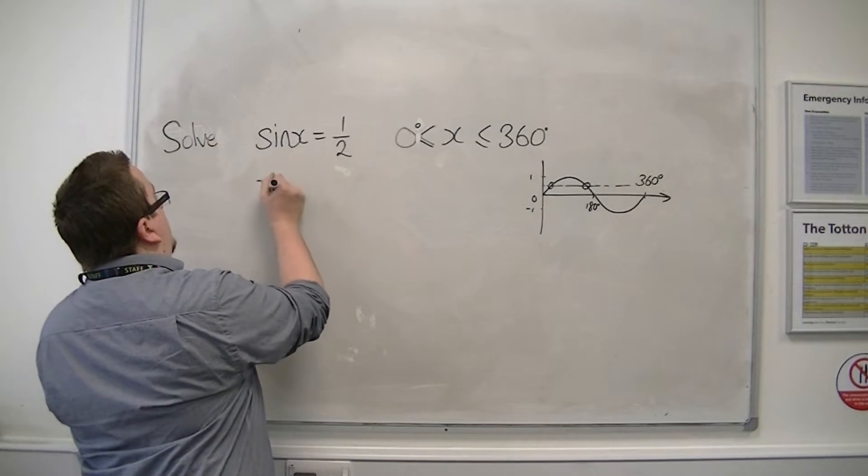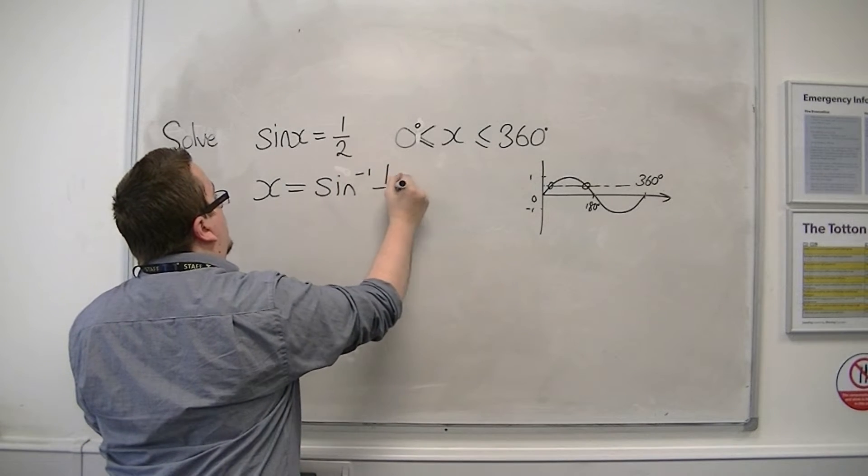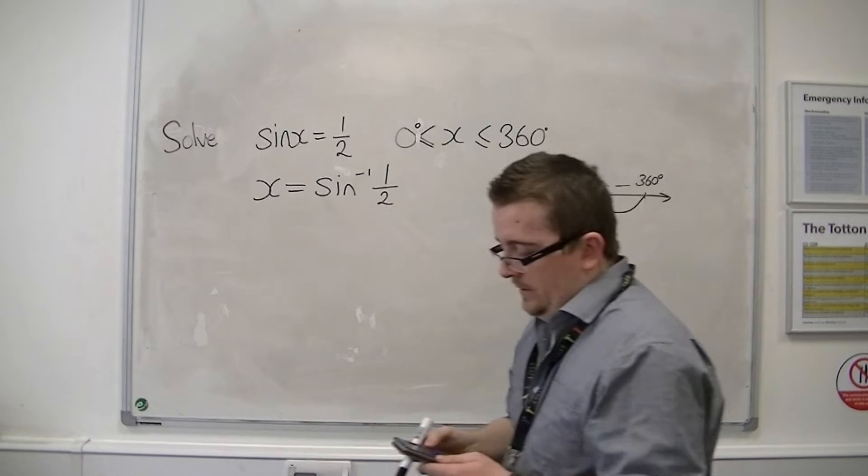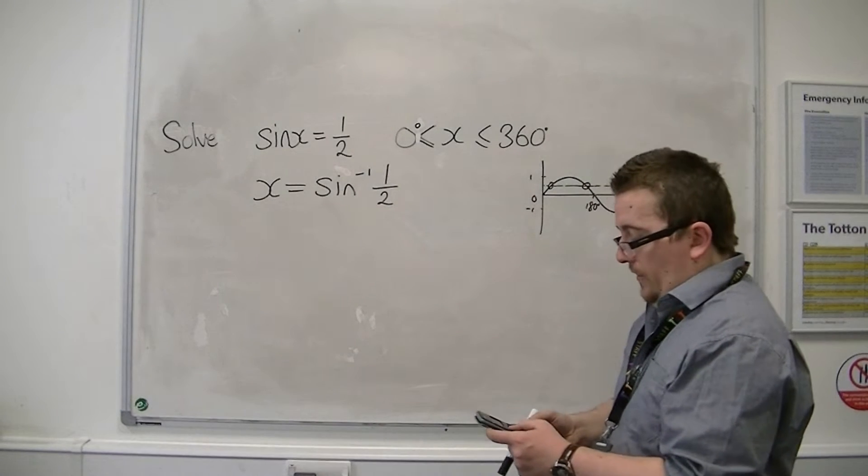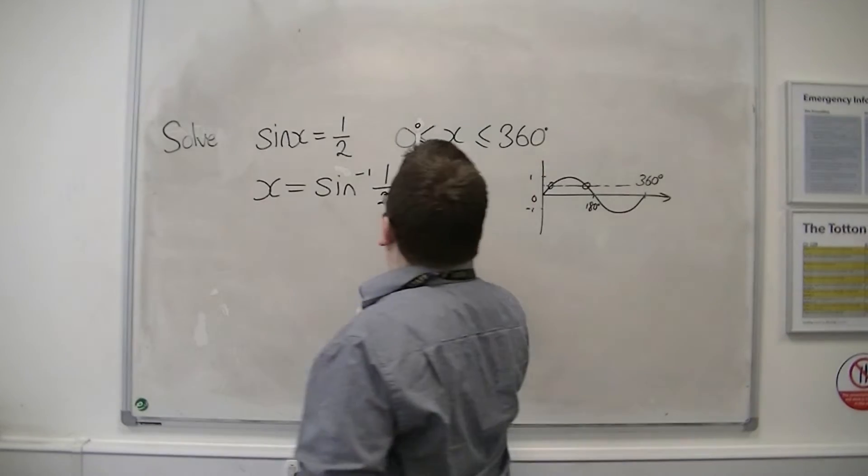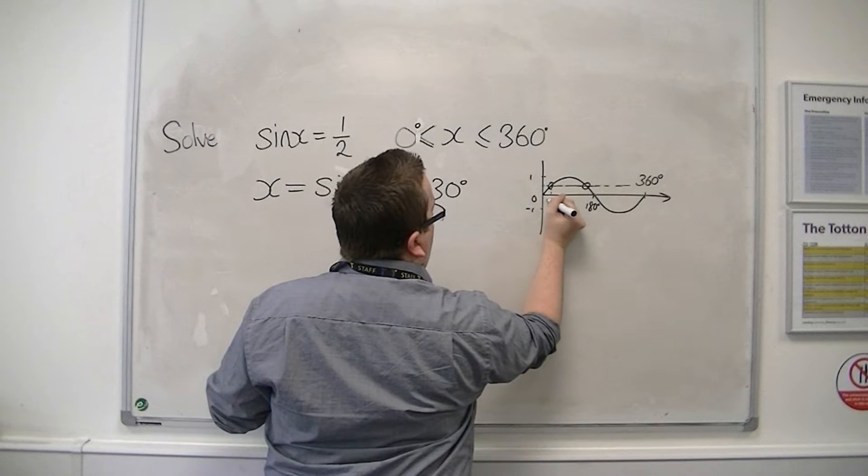So the first thing we do is we inverse sin the 1 half. Making sure your calculator is in degrees, so inverse sin 1 half, and you get 30 degrees. So our first solution here is 30.